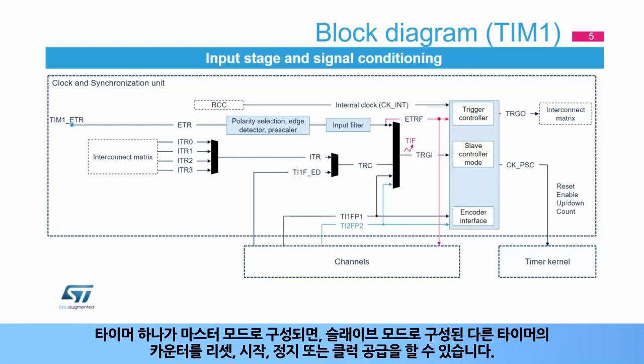ITR is a trigger that can be asserted by another timer. Internal trigger in and out are connected to the interconnect matrix. When one timer is configured in master mode, it can reset, start, stop, or clock the counter of another timer configured in slave mode.